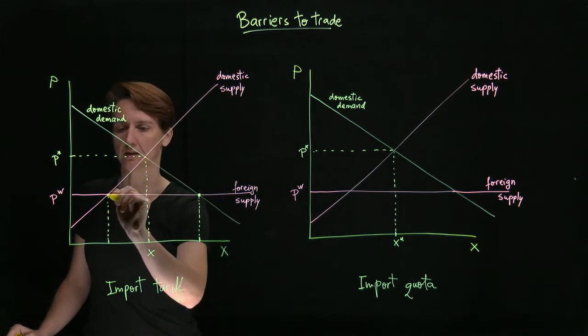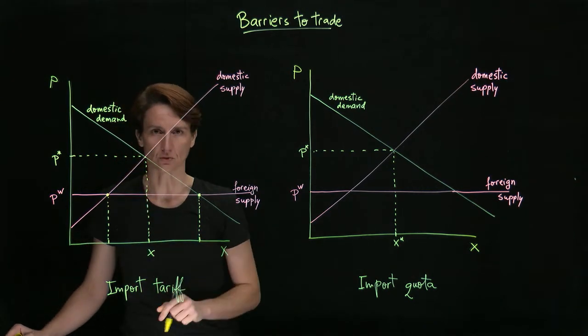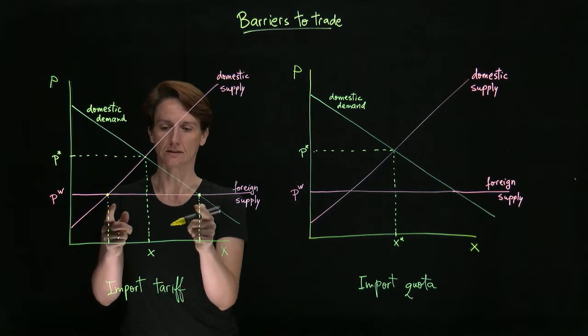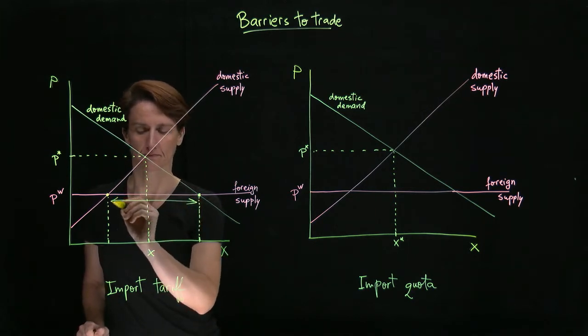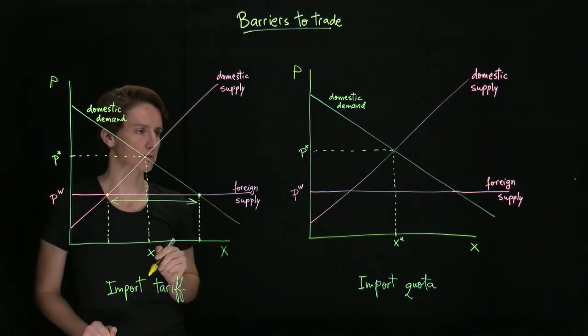So this will be the quantity that domestic consumers buy, this will be the quantity that domestic producers sell, and the difference between them will be imports. And the same picture applies here.